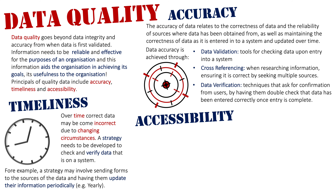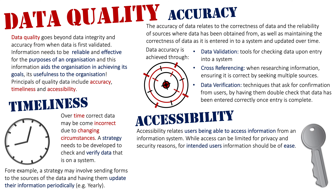Finally, we'll look at accessibility. Accessibility essentially relates to users being able to access the information from within an information system. While access can be limited for privacy and security reasons, we're specifically talking about intended users, who should be able to extract information from a system with ease.